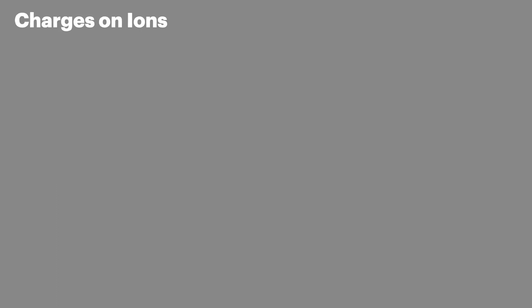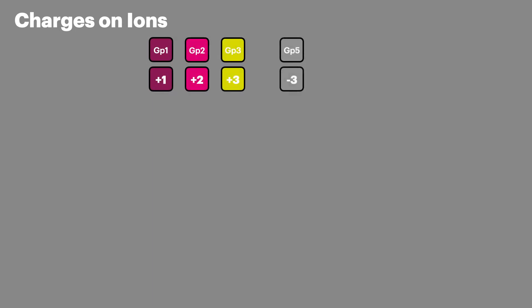It's really important that we know the charges on different ions. Most elements are easy with their charge being linked to their groups on the periodic table. This is because when they form ions they adopt an electron configuration of the closest noble gas, by either losing electrons as is the case for metals in groups 1, 2 and 3, or gaining electrons like the non-metals in groups 5, 6 and 7.